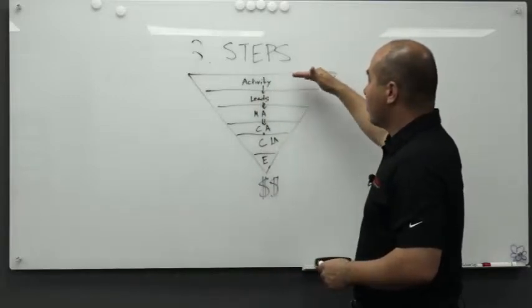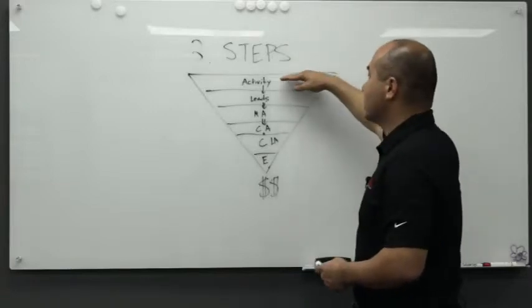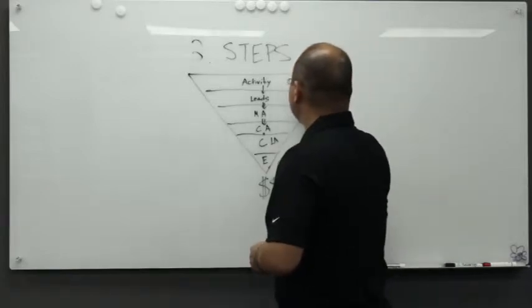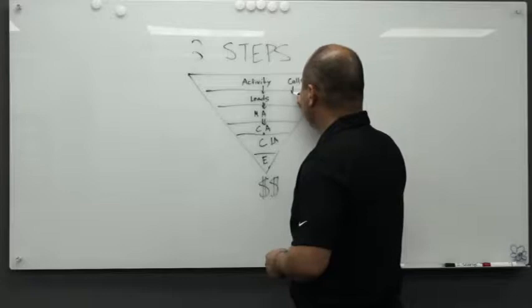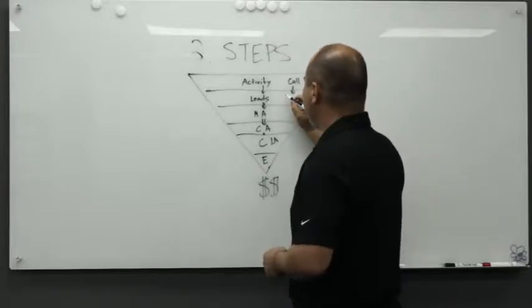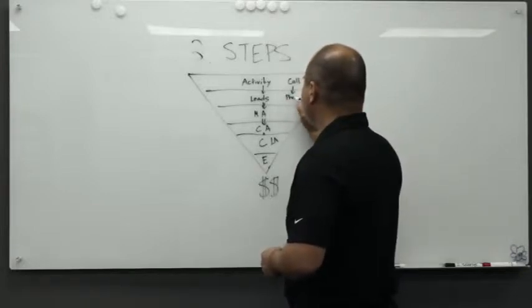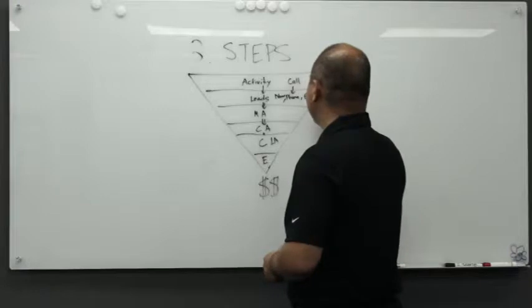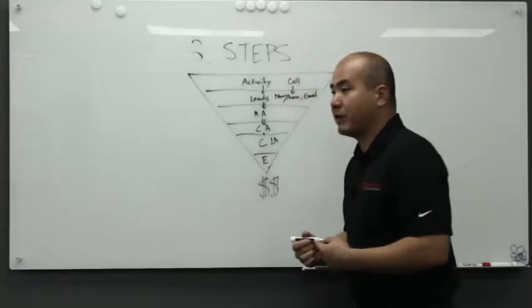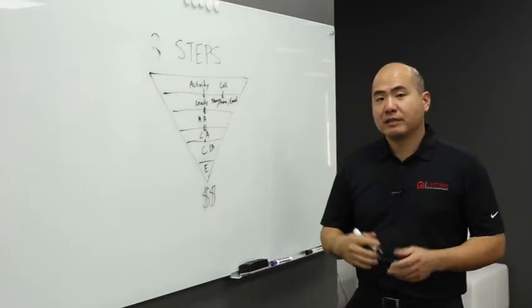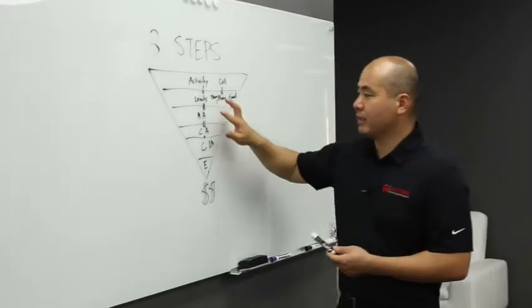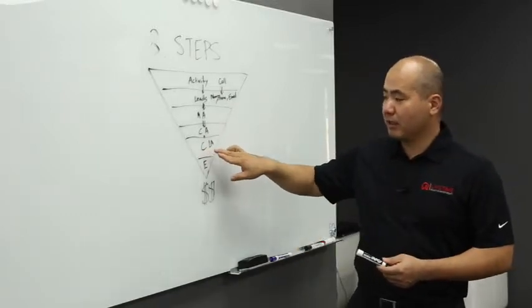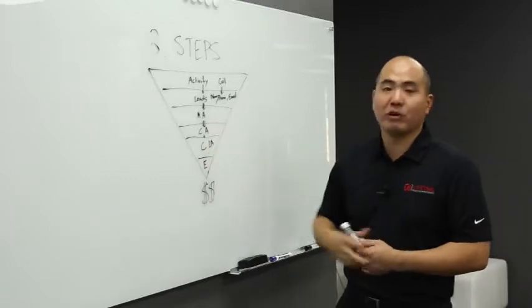So making sure what the steps that I need to do, which is activity. Activity for sell by owner and expired is to call, make calls. And then make sure we can get the phone number, name, phone number, and email, which then they become a lead. And we set the appointment, and then we conduct the appointment. And then we put them under contract, which is the listing agreement. And then we would be opening escrow.